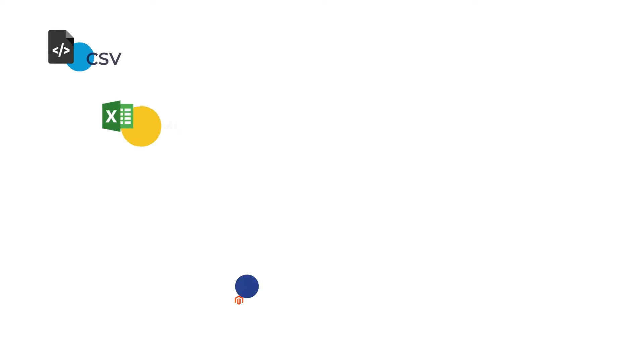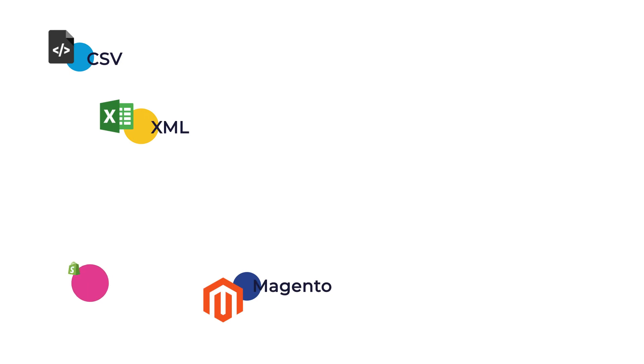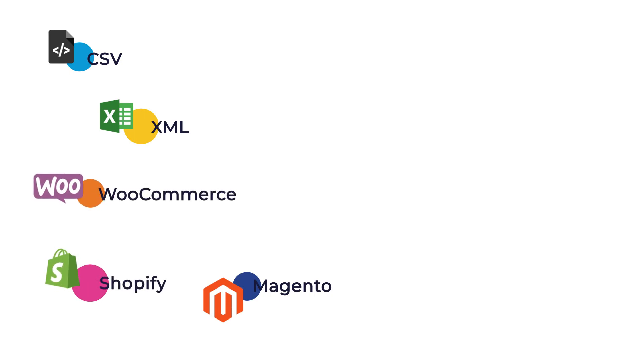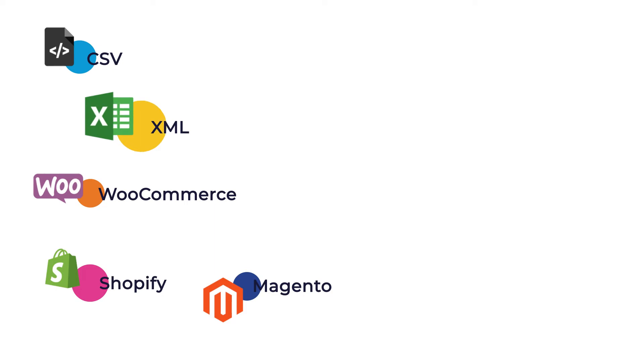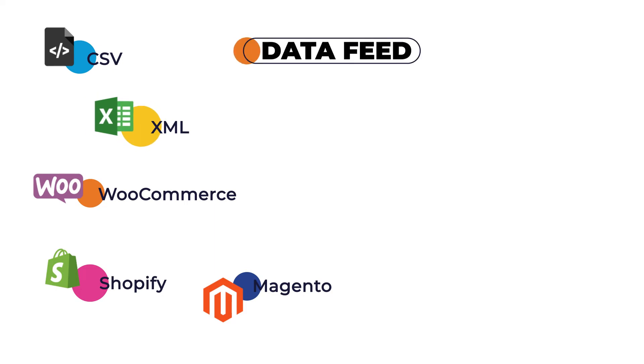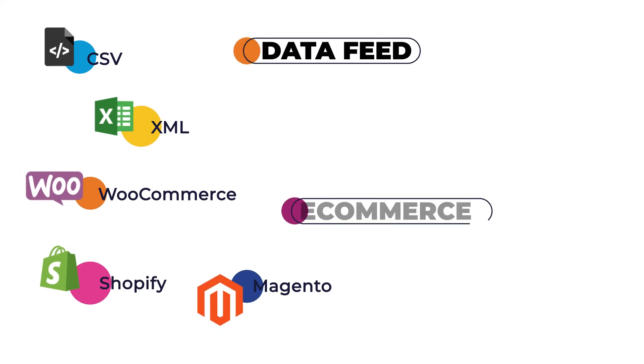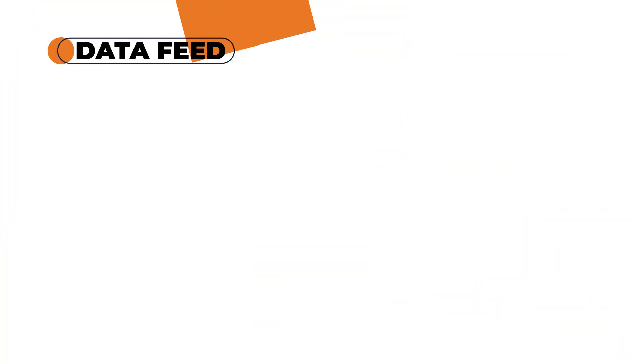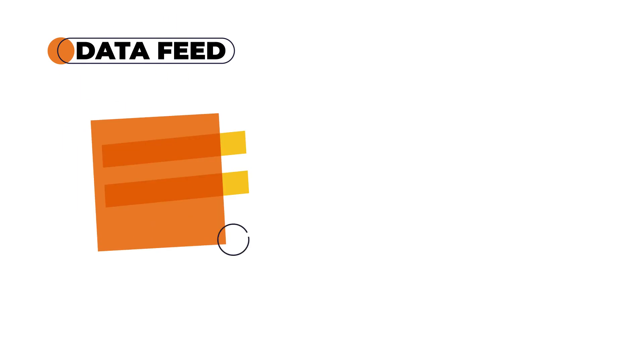That being said, what exactly is a data feed? We see some of the imports that Channable supports: CSV, XML, Magento, Shopify, and WooCommerce, just to name a few. CSVs and XMLs are files that may contain a data feed. Magento and WooCommerce are e-commerce platforms that create a data feed. Simply put, a data feed is a file with information about services or products.